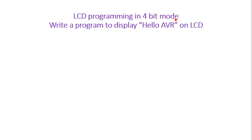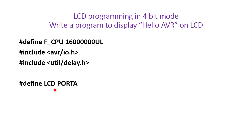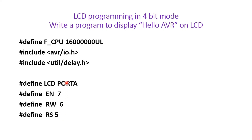Now let us write the program for LCD in 4-bit mode to display the string 'Hello AVR'. We define F_CPU as 16,000,000UL for 16 MHz CPU frequency. We include the avr/io.h header file because we use IO registers like DDRA and PORTA. We also include util/delay.h for the built-in delay functions. Then we define LCD as PORTA, and define Enable as pin 7, RW as pin 6, and RS as pin 5 using macros.